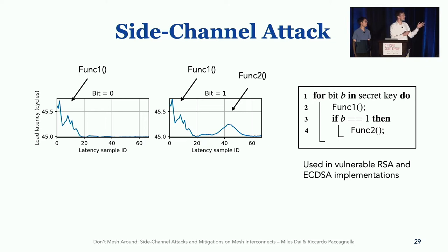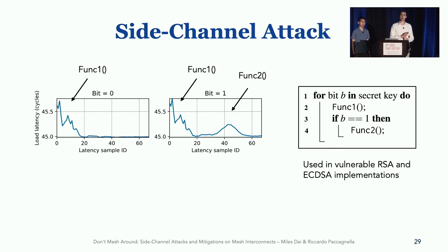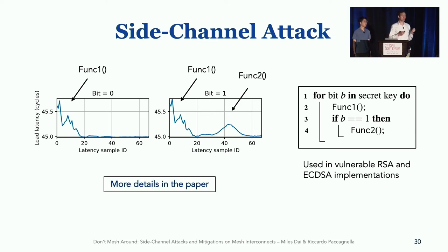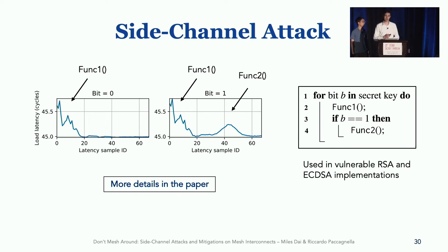Here are two traces corresponding to the first iteration of the victim's loop. In the trace to the left, there is an execution of function 1 that is clearly visible. In the trace to the right, we can see that both function 1 and function 2 execute, and their execution is visible through interconnect contention. We provide many details about how this side channel works in the paper and also generalize this approach to all subsequent iterations of the victim.